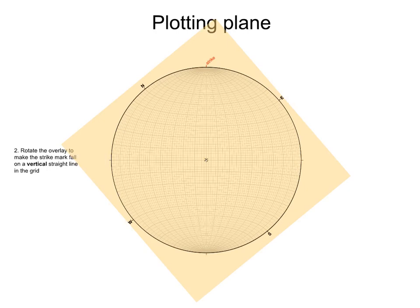We then rotate the overlay to make the strike mark fall on a vertical straight line in the grid. Notice that the strike mark should be on a vertical line in the grid. The plane is dipping to the west.